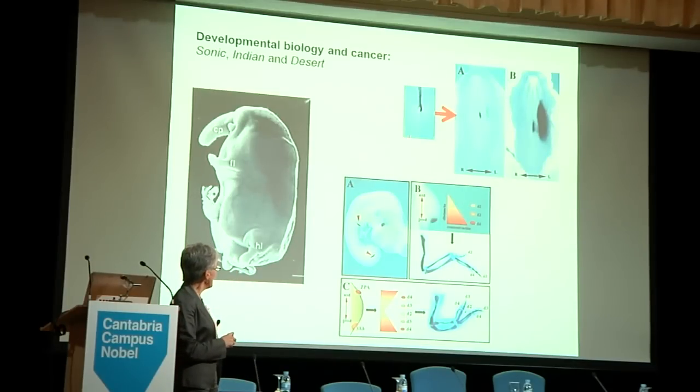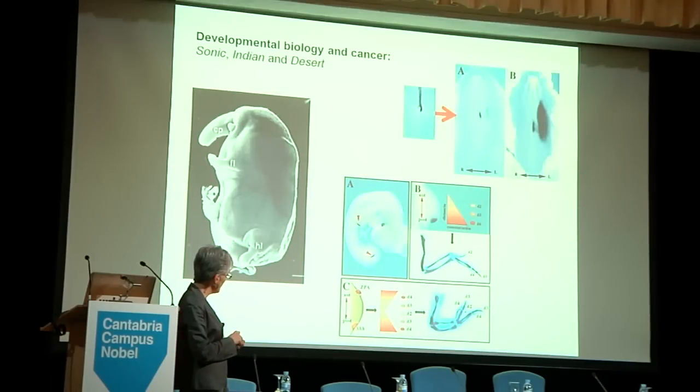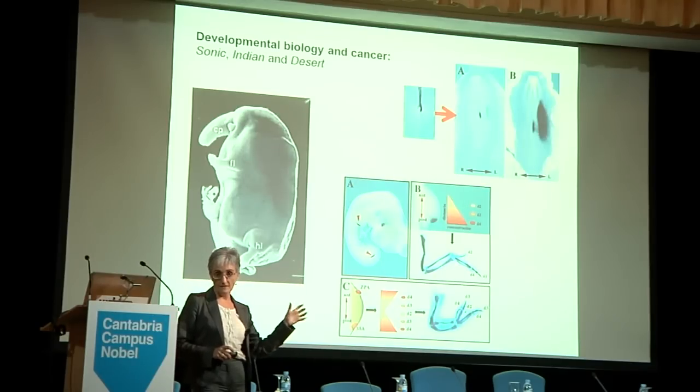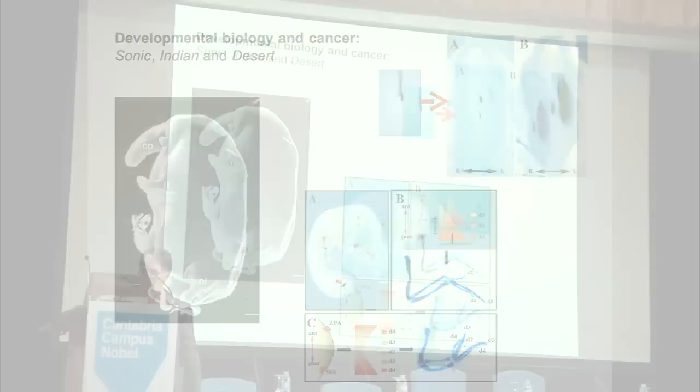Sonic Hedgehog is expressed in the node and controls expression of Nodal only on the left-right side of the body, ultimately controlling the position of our internal organs. It is expressed in the notochord and controls ventral patterning in the neural tube, expressed in the midline and controls midline structures, and expressed in cells in the posterior border of the limb bud — the zone of polarizing activity — controlling the shape and morphology of the digits in our hand. The Sonic Hedgehog mutant is a real monster: it is a cyclops with a proboscis and many alterations in the body and the limb.